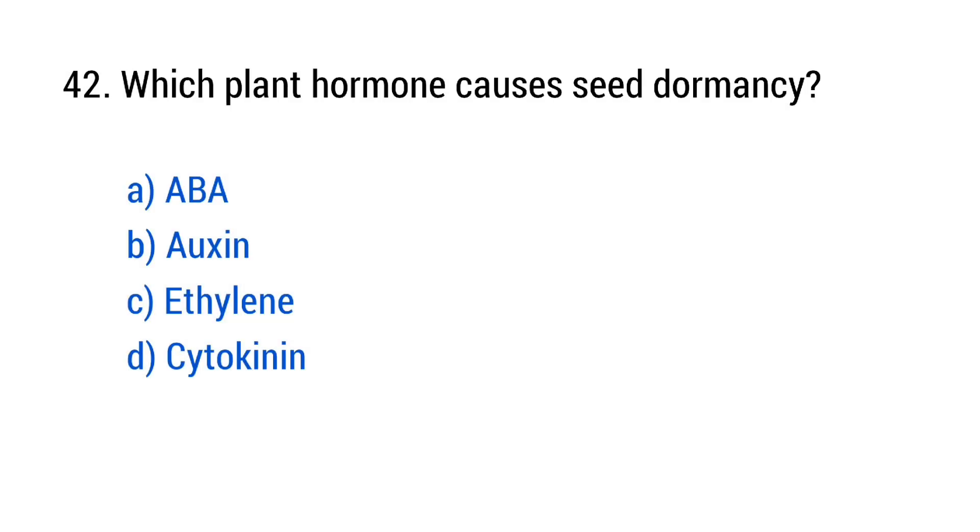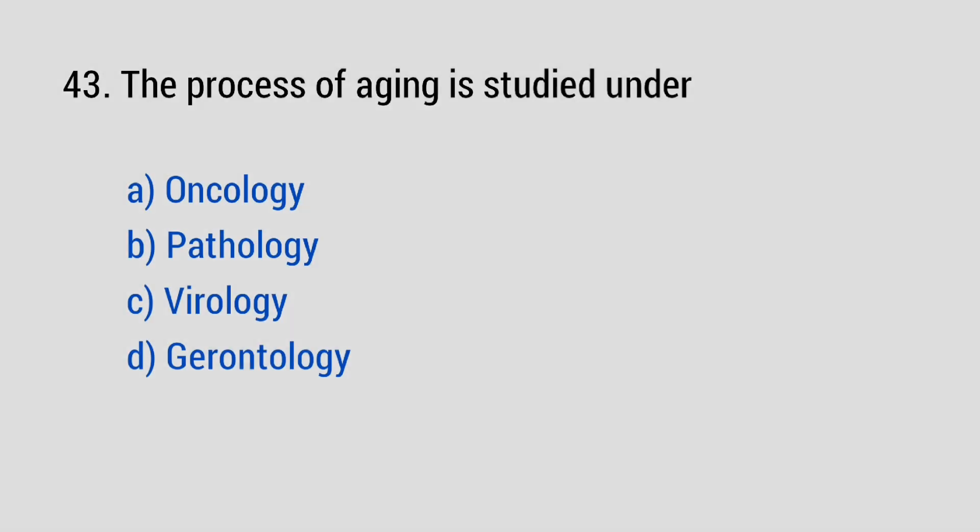Question number 42. Which plant hormone causes seed dormancy? The right answer is option A, ABA. Question number 43. The process of aging is studied under? The right answer is option D, gerontology.